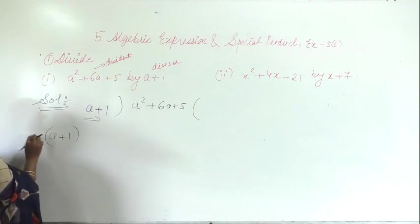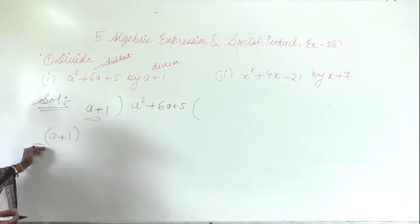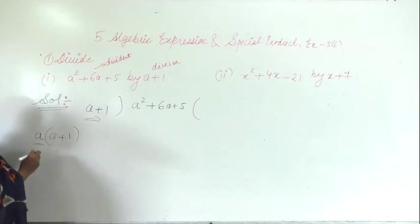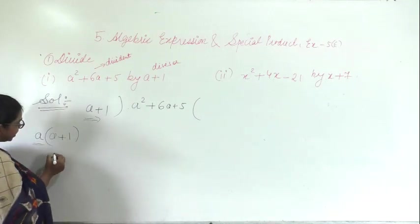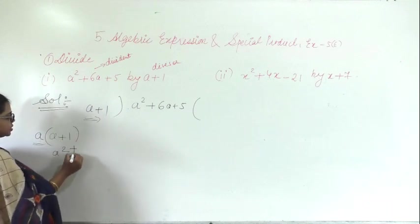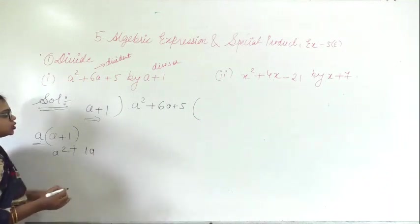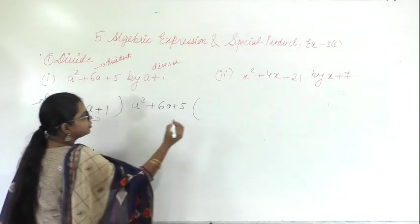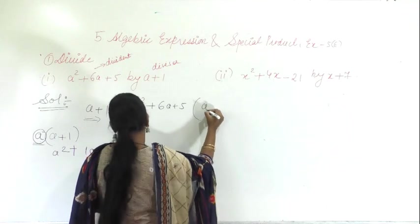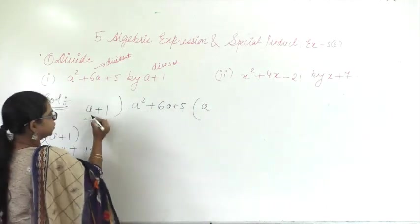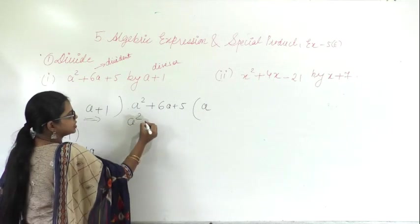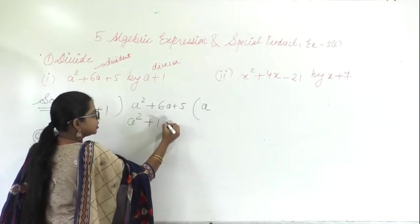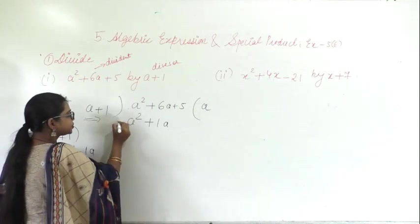By which number will you multiply to get a squared? If I multiply here with a, what will you get? a into a is a squared, plus a into 1 is 1a. So if I multiply with a, I get a squared plus 1a.